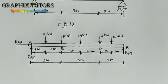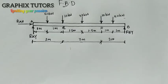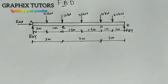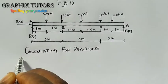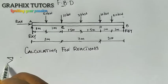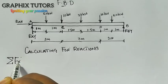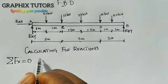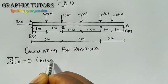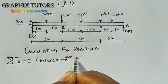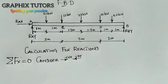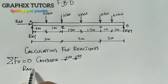Now let's move up and calculate for the reactions. To calculate the reactions, we need the conditions for equilibrium. There are three of them. The first condition is that the summation of all horizontal components, ΣFx, equals zero. We consider any force acting to the right as positive and any force acting to the left as negative. Looking at this figure, we only have one horizontal component, which is RAX, so RAX equals zero.